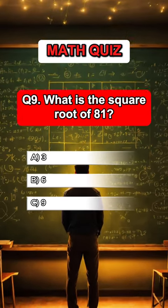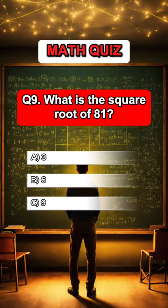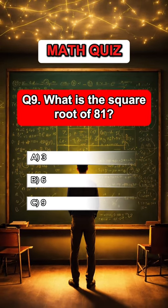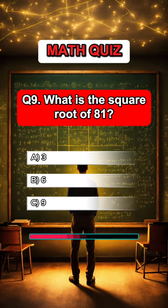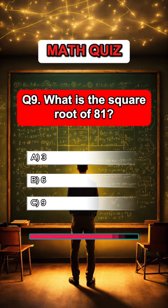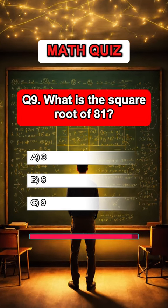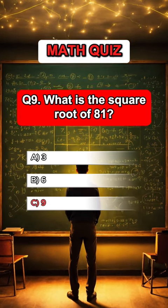Question 9. What is the square root of 81? Answer C, 9.